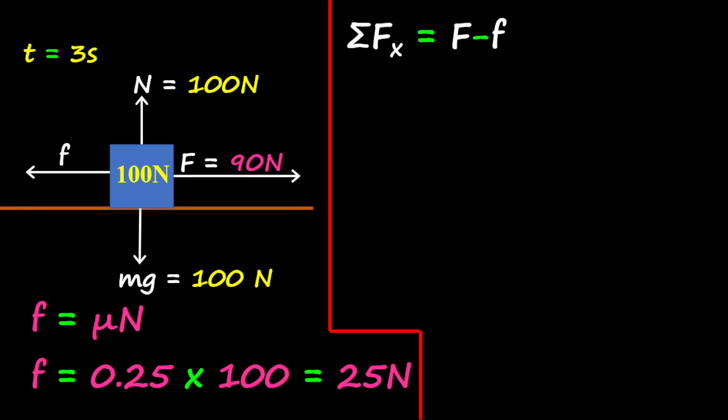So therefore, the total force is equal to the applied force, F, minus the frictional force. And so here now we have 90 minus 25, and we get the total force in the X component being 65 Newtons.